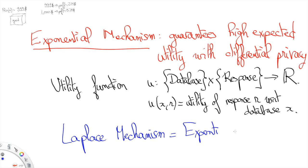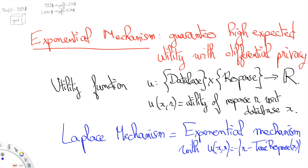That is, u computes a utility u(x,r) of a response r with respect to database x. We can retrieve the Laplace mechanism case by setting u(x,r) to be minus the distance between r and the true response of x, the response that we would get in the Laplace mechanism if we did not add any noise.